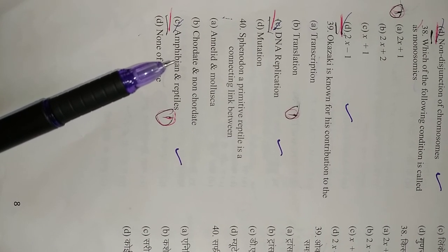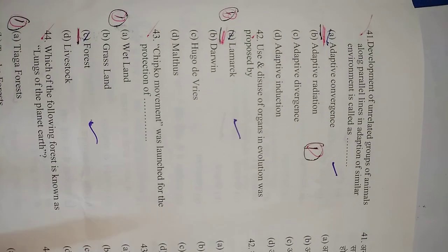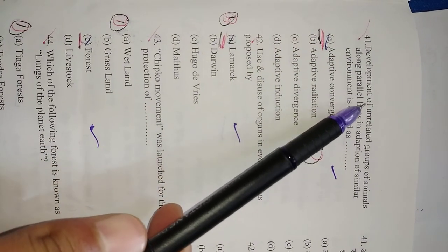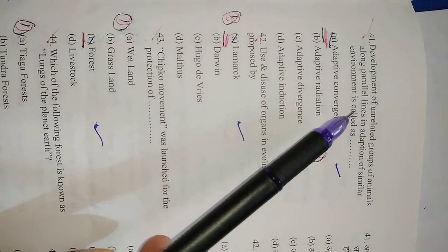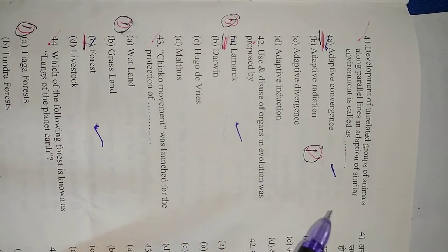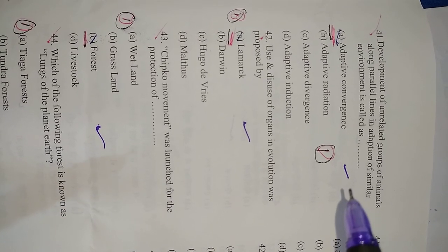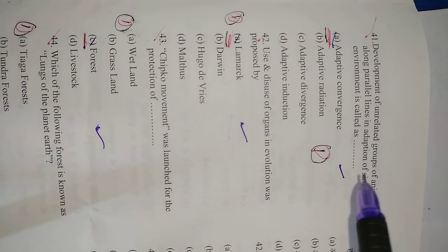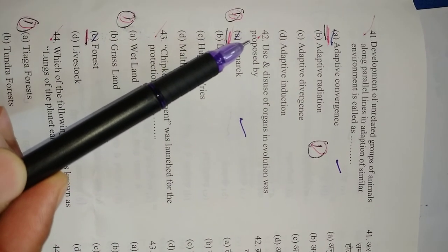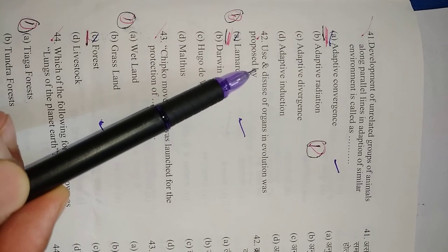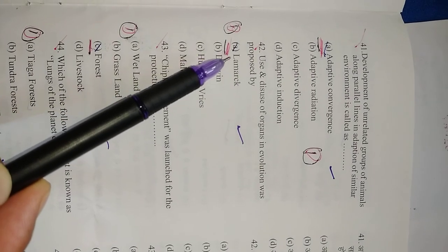Question number 41: Development of unrelated groups of animals along parallel lines in adaptation of similar environment is called—it is called adaptive convergence. So right option is adaptive convergence. Question number 42: Use and disuse of organs in evolution was proposed by Lamarck, the theory of Lamarckism. So right option is A.